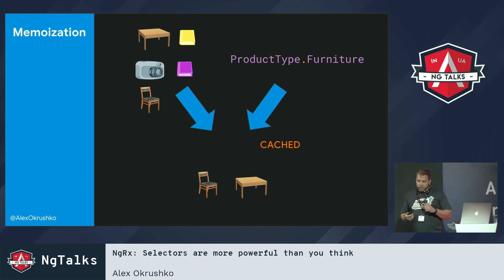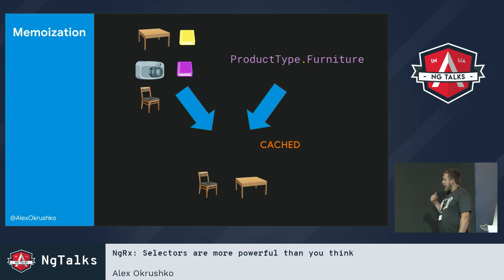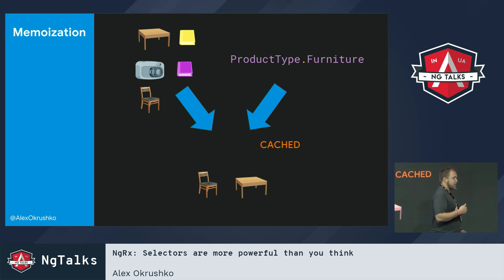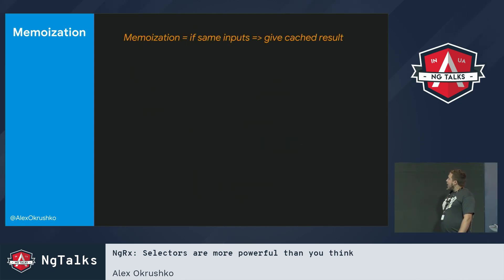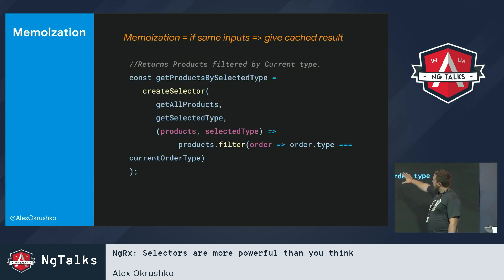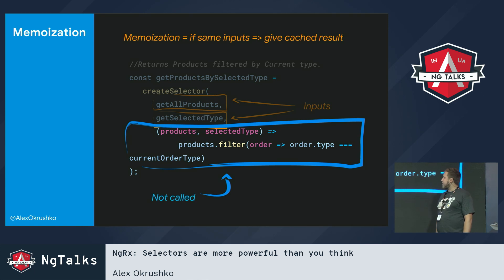Why does it help? When it returns the cached result, components that select it have the same instance of the object. That means if you have change detection, you will not re-render the component, because nothing changed. So if you call it a third time with the same inputs, you still get the cached result back. With memoization, if we have the same inputs, we get the cached result back. GetProducts and getSelectedType are our inputs — if they stay the same, our projector function is not called.